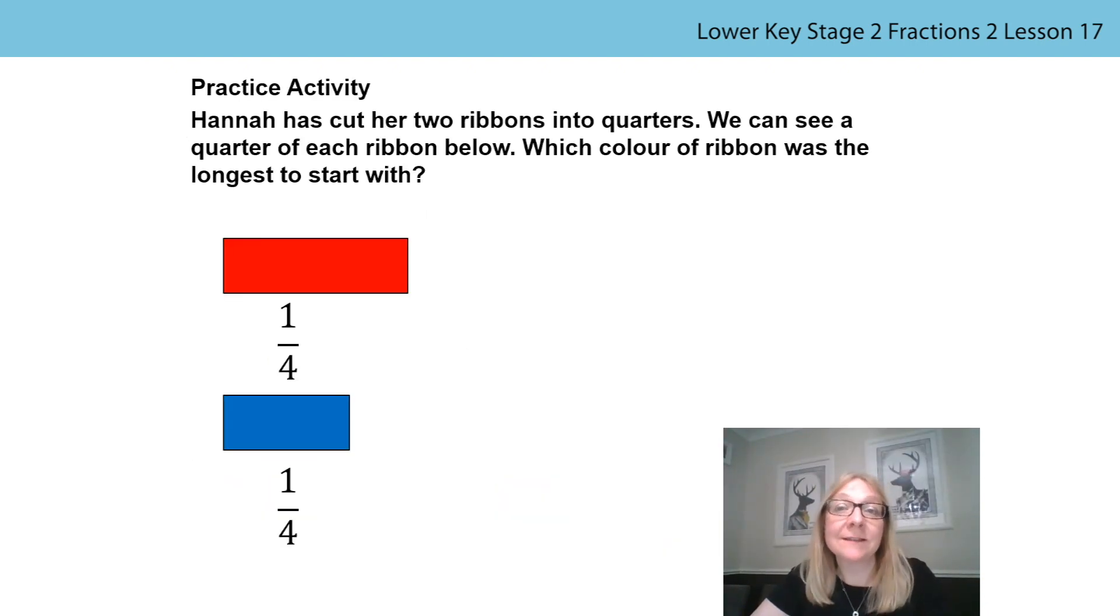You've done really well today comparing lengths and distances. All of the parts we have used have represented the same fraction of the whole but the parts have not been the same length. This is sometimes hard to explain and so your practice activity in this lesson is to answer this question by drawing a representation of the whole length of each ribbon and then by either writing down or explaining to someone else in your house why one ribbon is longer than the other even though each part represents one quarter of the whole. Perhaps you could even design your own question for someone else. Good luck!